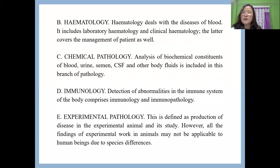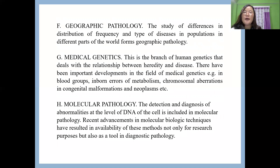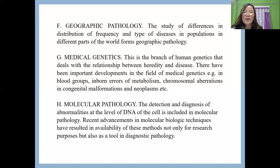Experimental pathology involves performing the same kind of study in an experimental animal by inducing some kind of disorder. Geographic pathology involves studying a specific population in a different set of areas. Medical genetics is the branch of human genetics dealing with disease and heredity status — including blood groups, inborn errors of metabolism, chromosomal abnormalities, congenital malformations, and neoplasms. Finally, molecular pathology involves the diagnosis and detection of abnormalities at the level of DNA.